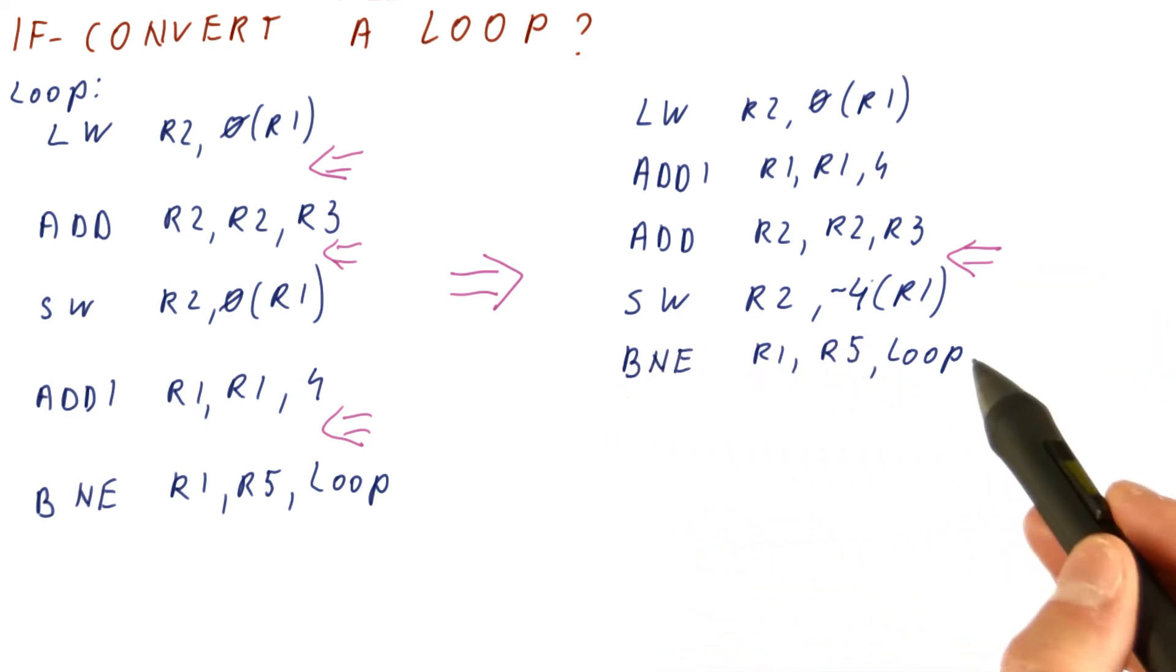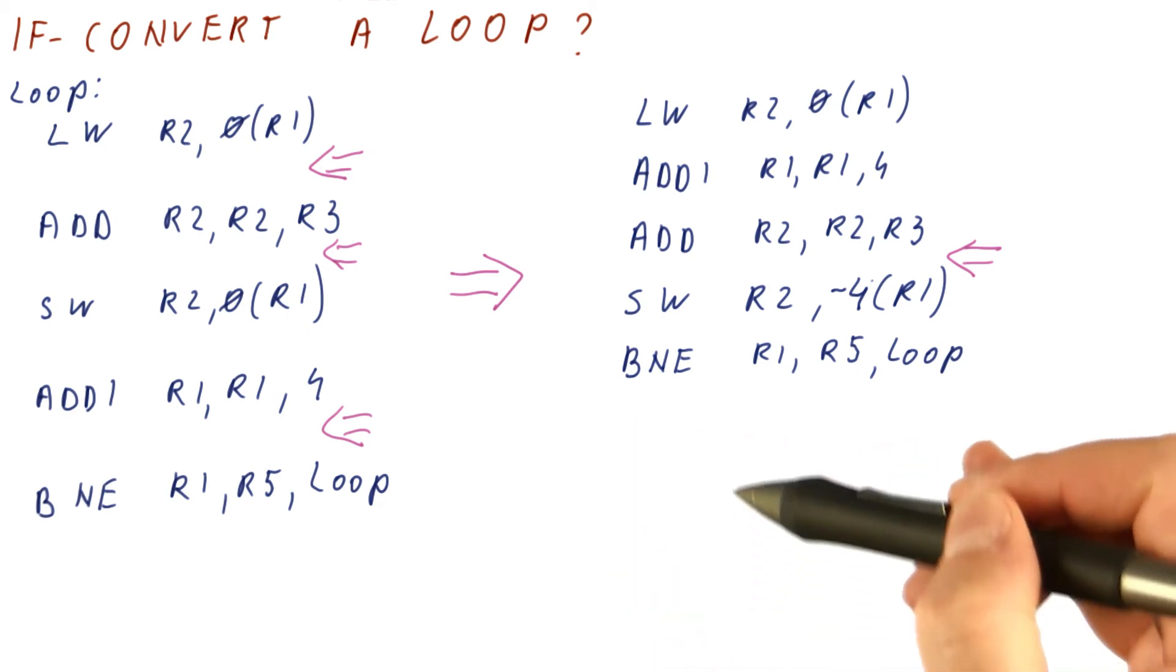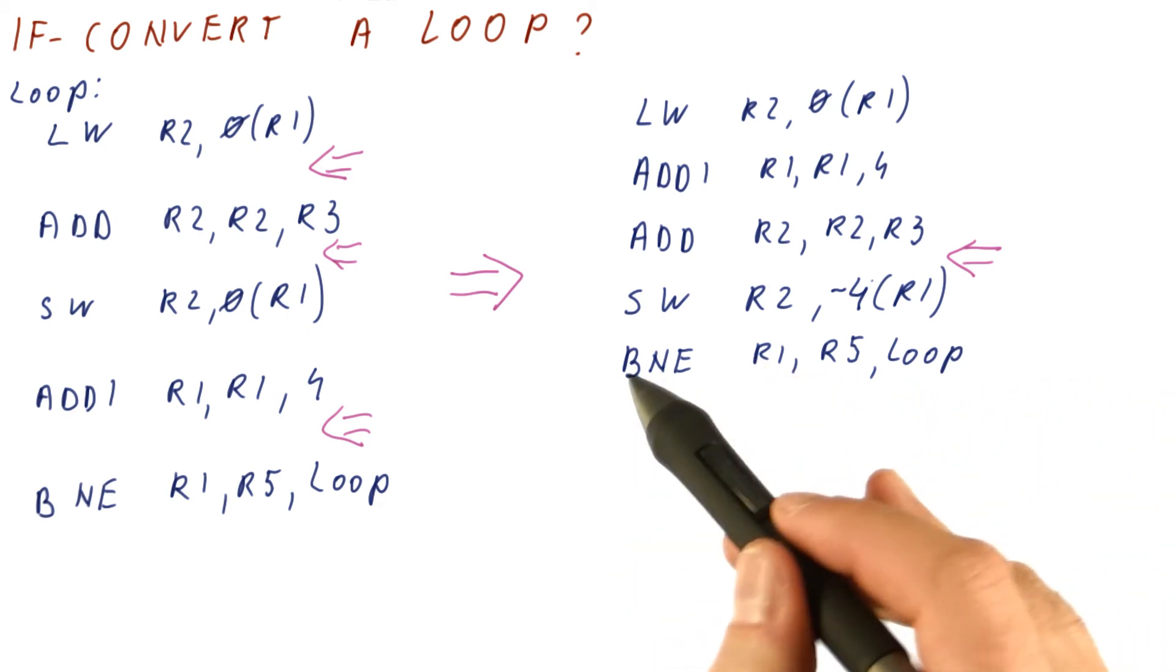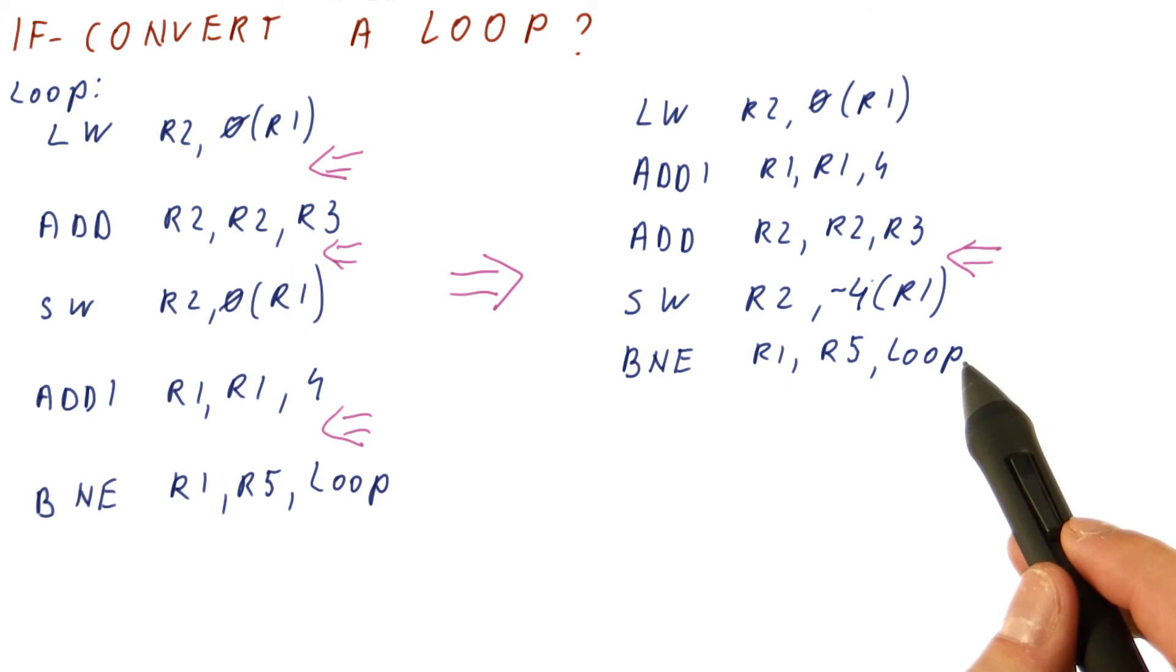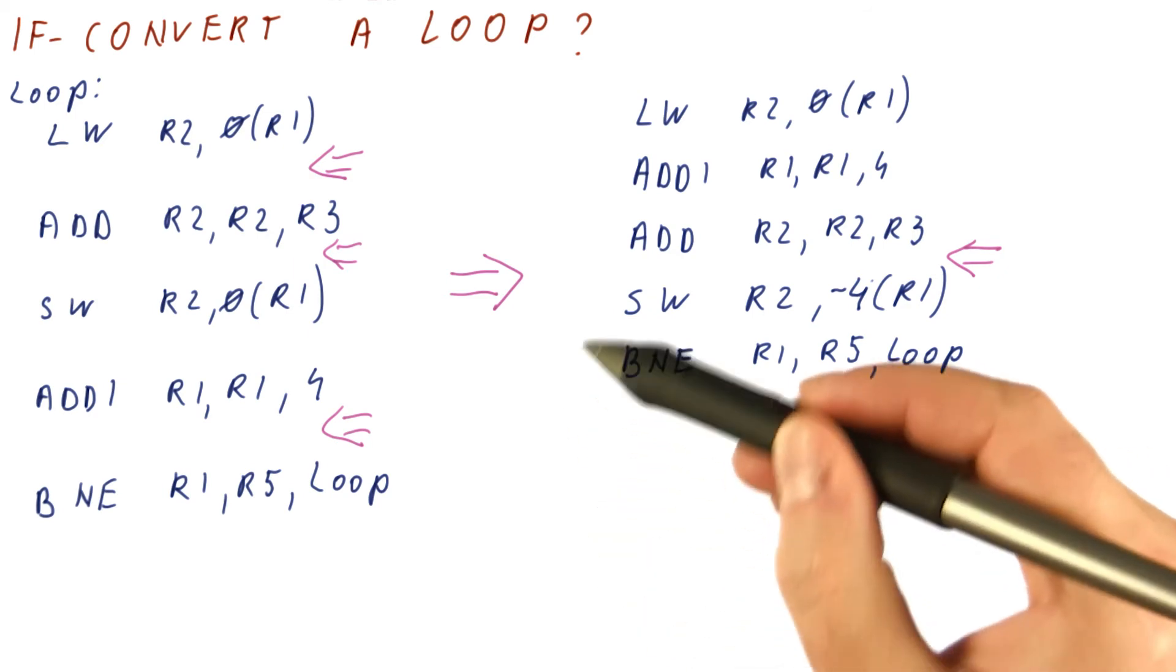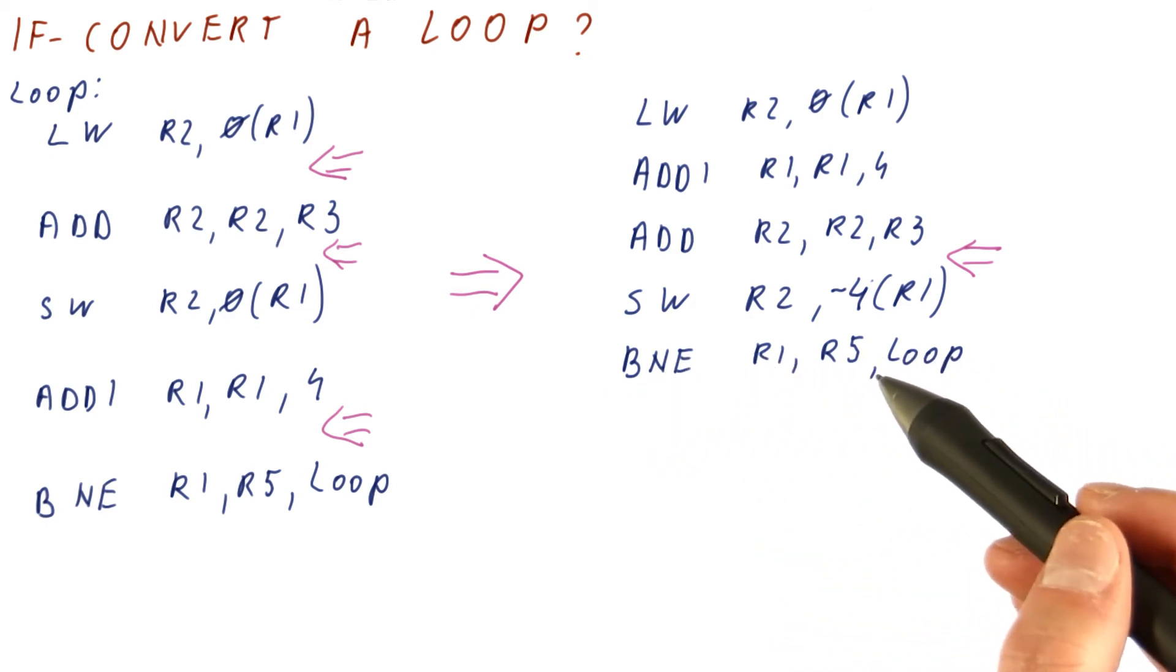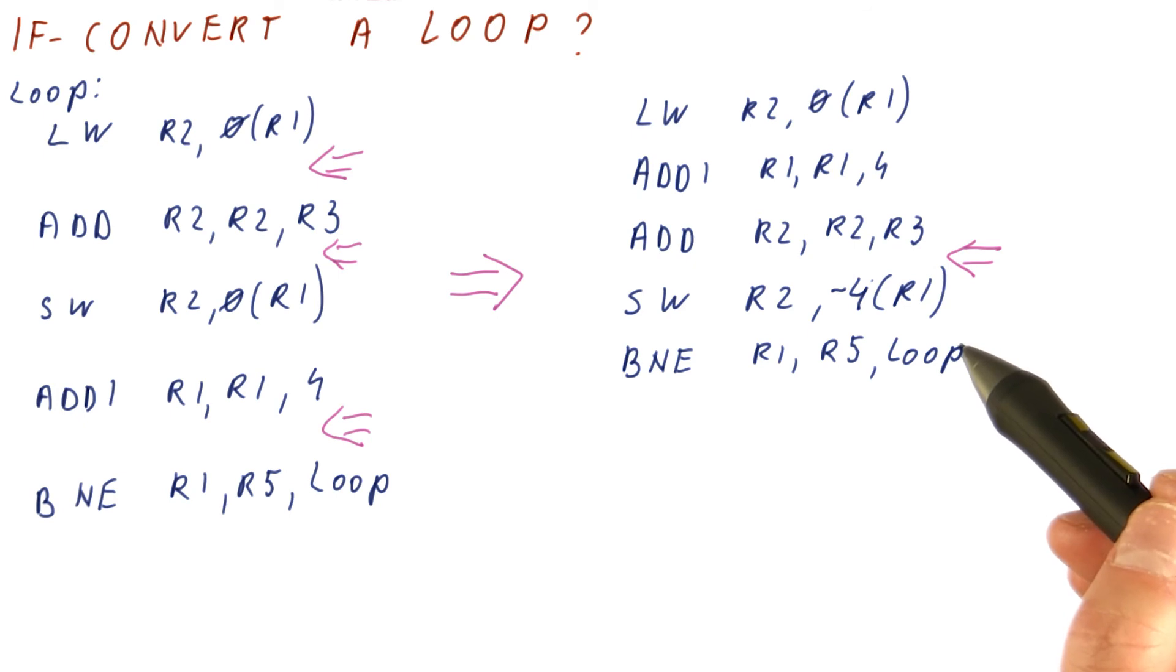Now if you look at this branch here, if-conversion would allow us to do the next iteration of the loop here and then eliminate this branch because it would be predicated, and then we could maybe find something here that can go over here. But the problem is that a loop is not really suitable for if-conversion, because every time we have a new iteration, we would have to introduce a new predicate, and then every new iteration would introduce yet another predicate, and we simply cannot deal with so many predicates and so many things that get done only if the predicate is true.